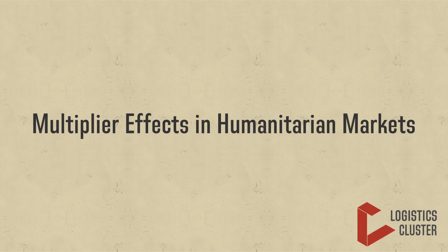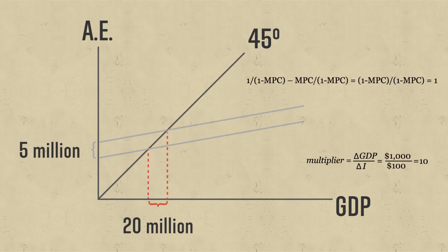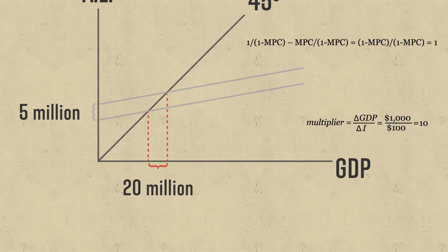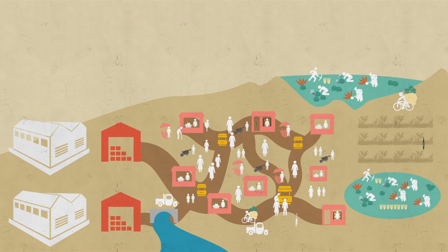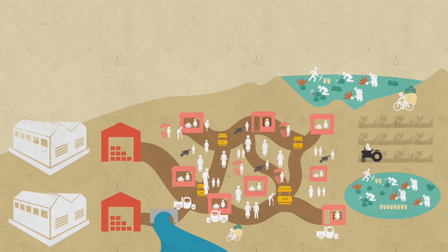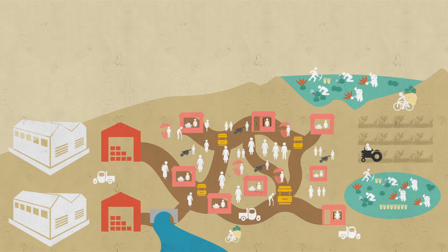This video is about the multiplier effect and how it applies to markets in emergencies. We're not going to go into the detailed economics behind multiplier effects or explain the graphs and formulae, but we will try and put it in context. What are multiplier effects in a humanitarian market setting and how can this help us make decisions about how we program?